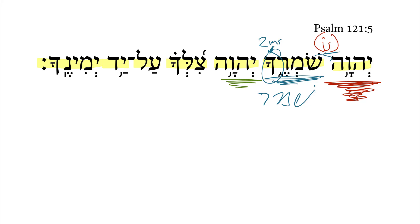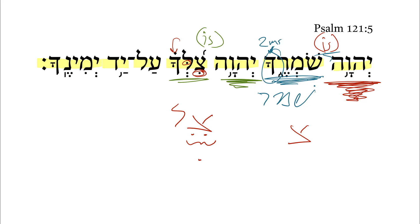Next we get the divine name again — Yahweh is, another verbless clause — your shade. Now the word here is usually tzal like this, but notice we get the dagesh forte when we add the 2ms suffix, and we get the reduction of the tsere to a hiriq once we add the suffix. This is probably indicative of an original root that was a geminate root with the two geminate letters right here — the two lameds — and when we end up with the suffix added to it, this dagesh forte lands to represent that third root letter.